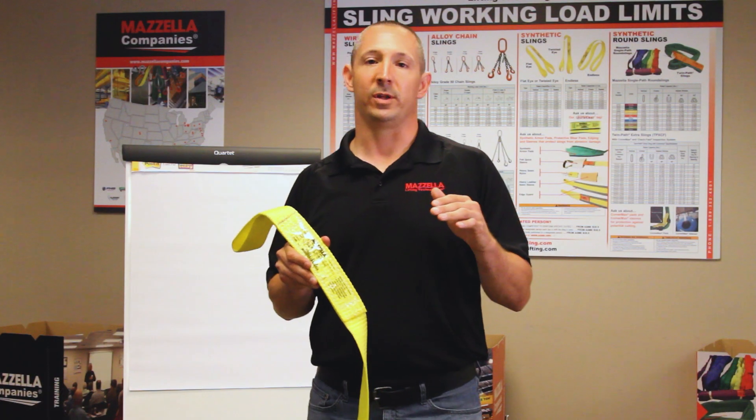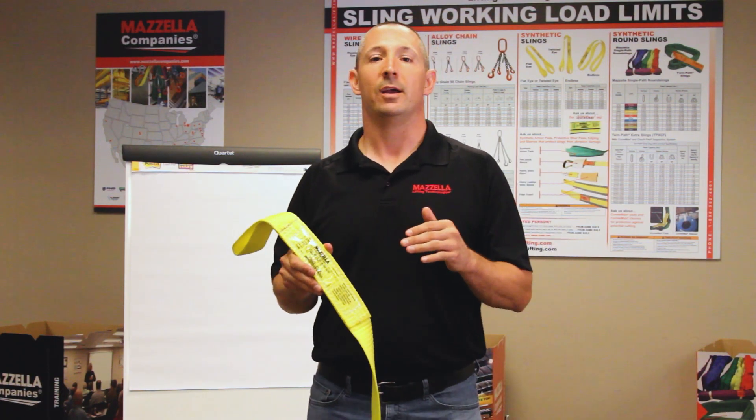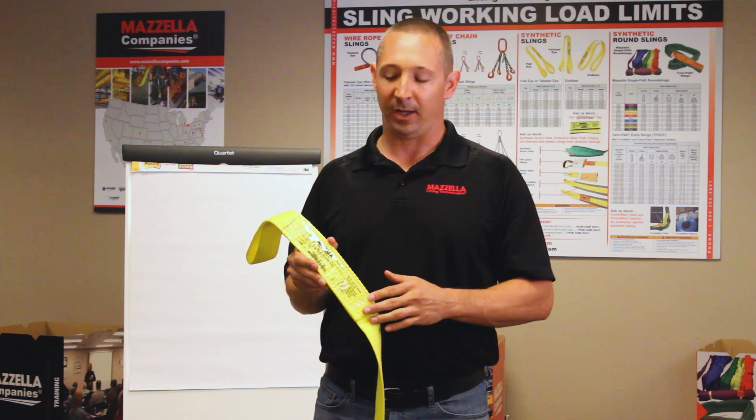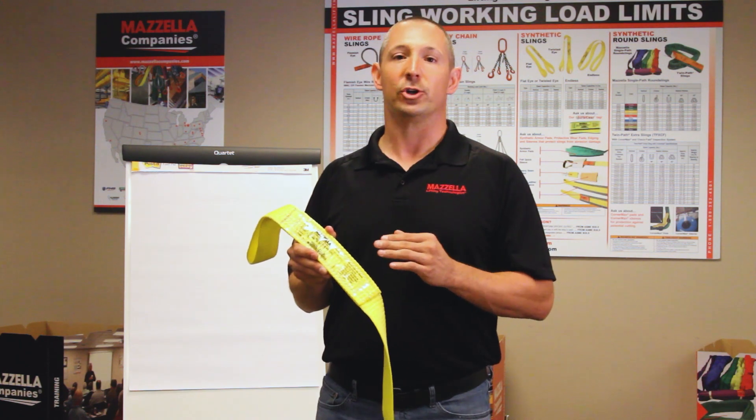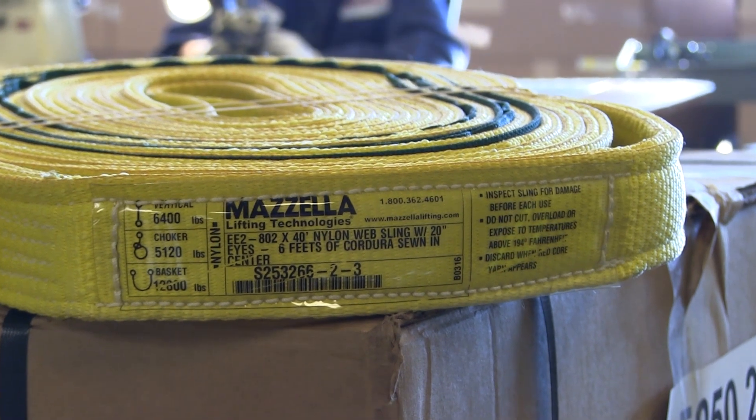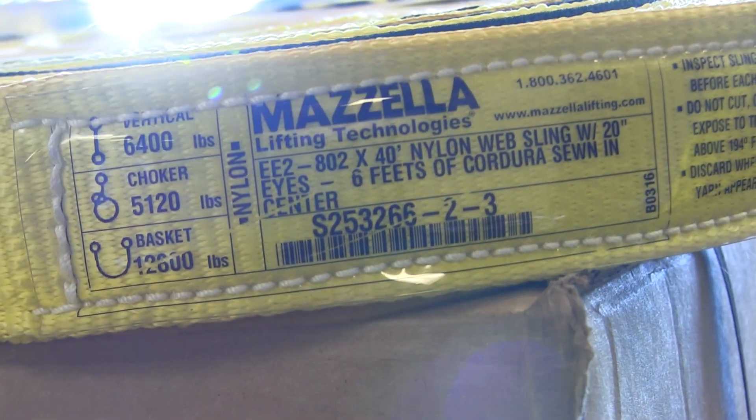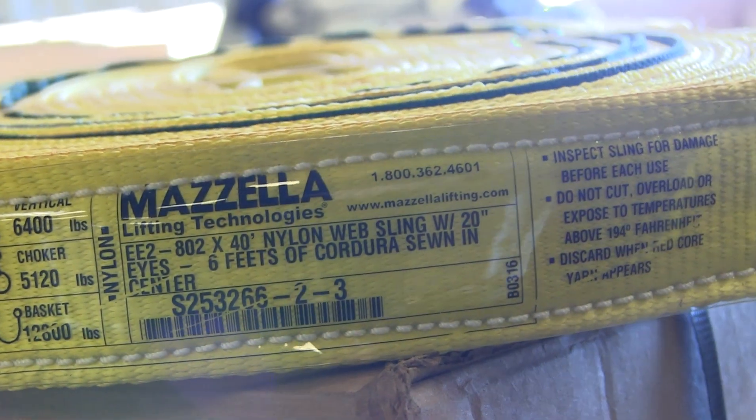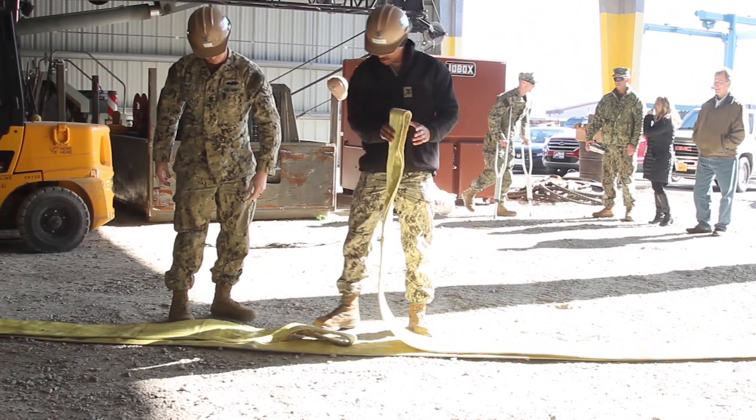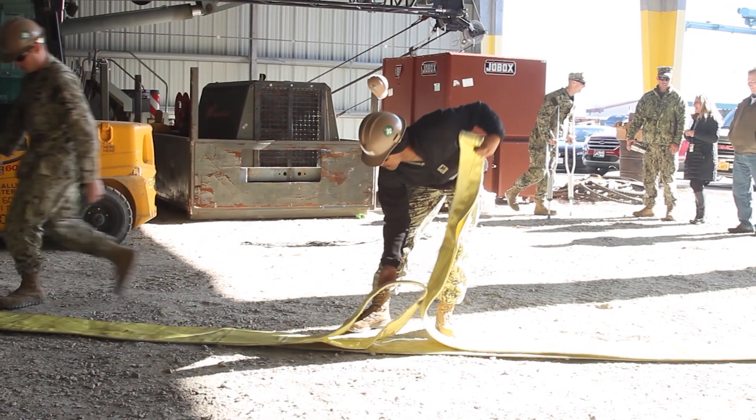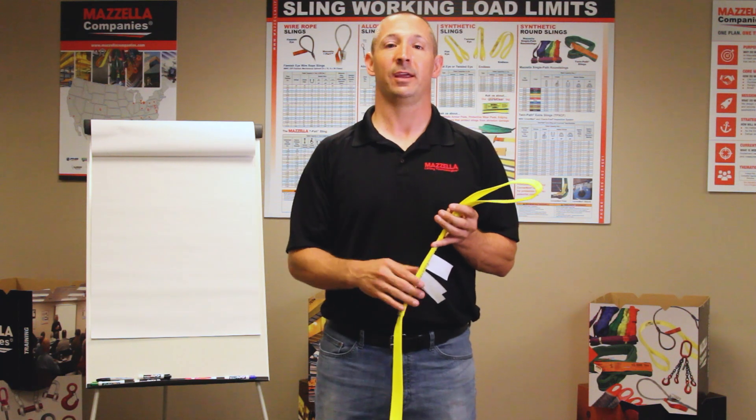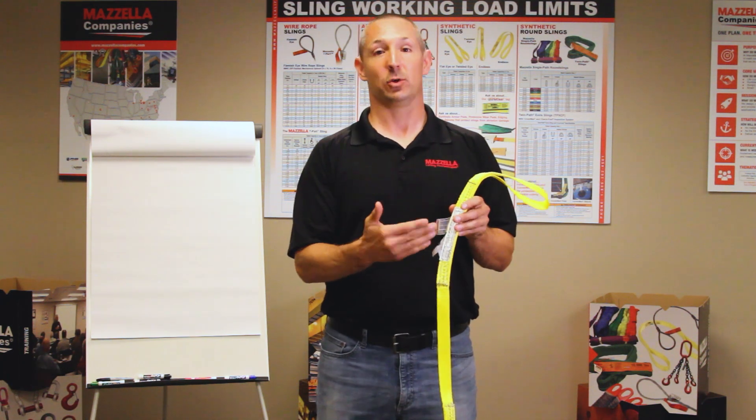One of the most important components of any flat web sling is going to be the tag. The tag must be legible. On the sling I'm holding right here, we've got one of our DuraClear tags. It's one of the most advanced sling tags in the industry. The reason for this is because the information is actually printed on the back side of the tag. With the information printed on the back side, even if your sling tag does get dirty or scraped a little bit, it can wipe away clean and the information is still legible. Now when I pick up a sling, it better have a tag on it. No tag, no use.